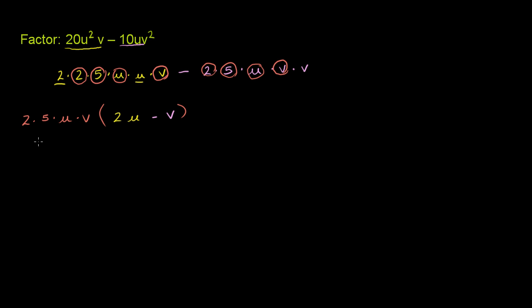We have factored it out. Now we can simplify it a little bit. 2 times 5 times u times v, we can rewrite as 10uv. And then inside the parentheses, we of course have a 2u and then a minus v. And we're done. We have factored the expression.